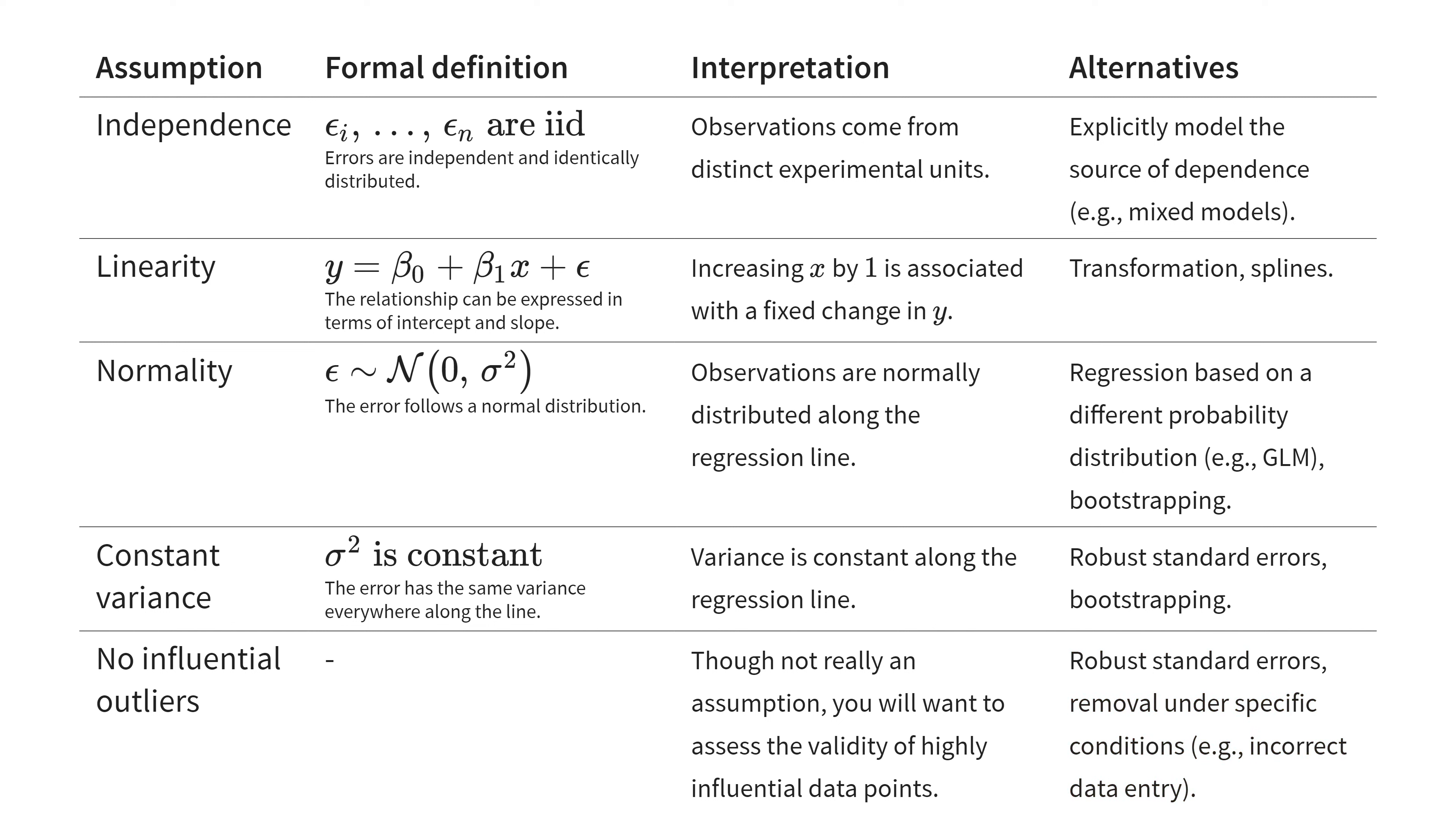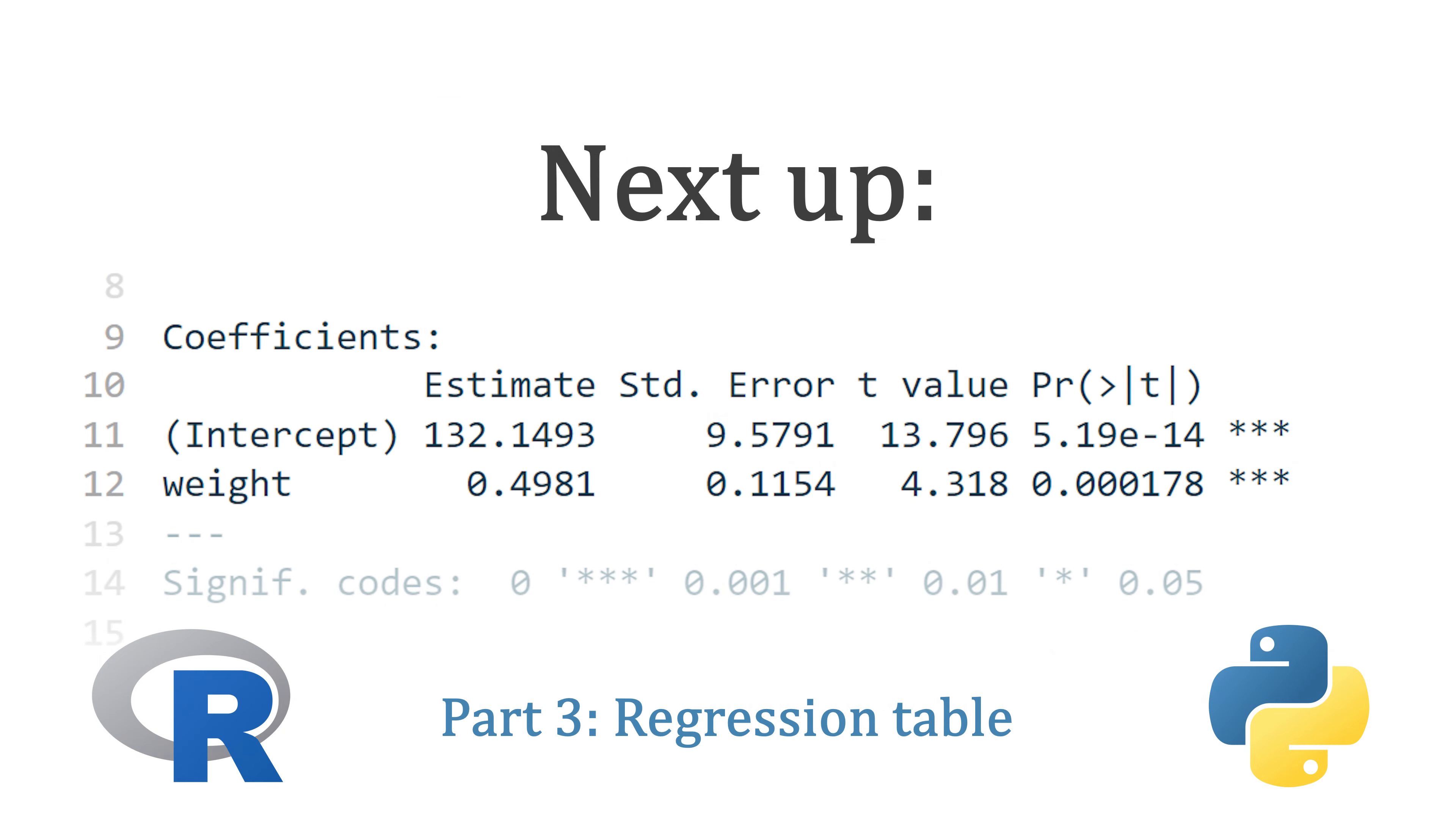To summarize, a simple linear model assumes independence, linearity, normality, and constant variance. If these assumptions hold, then we can produce useful model output called a regression table, which I'll show in the next video.